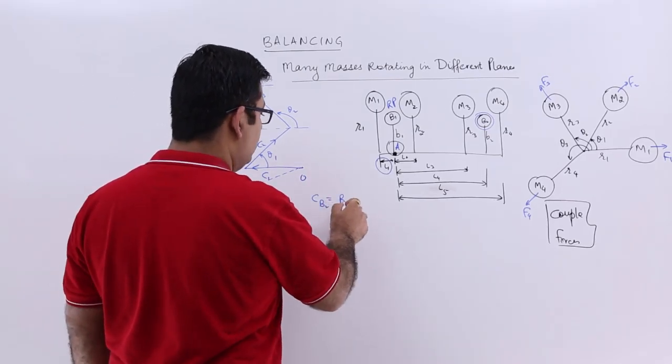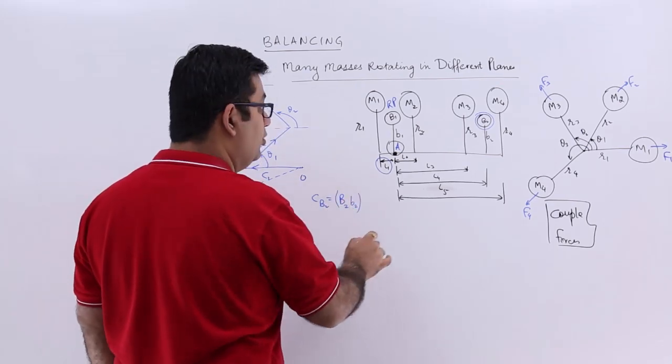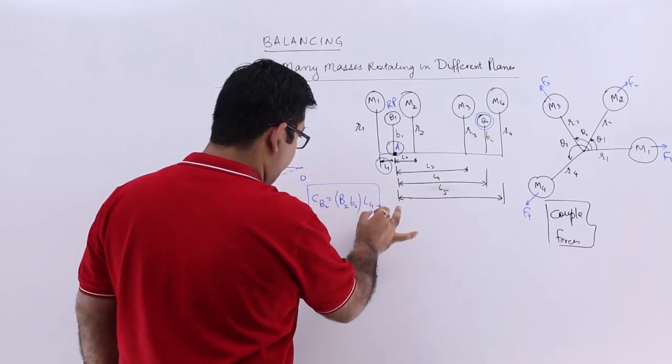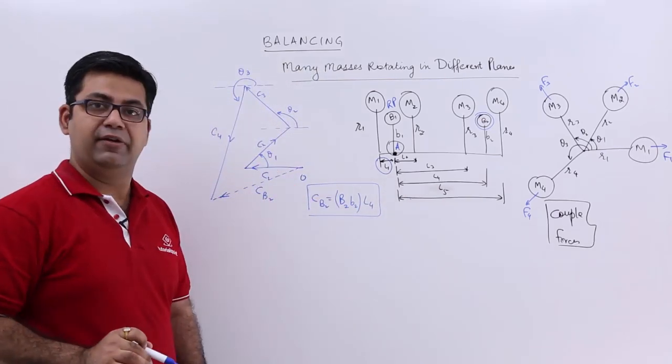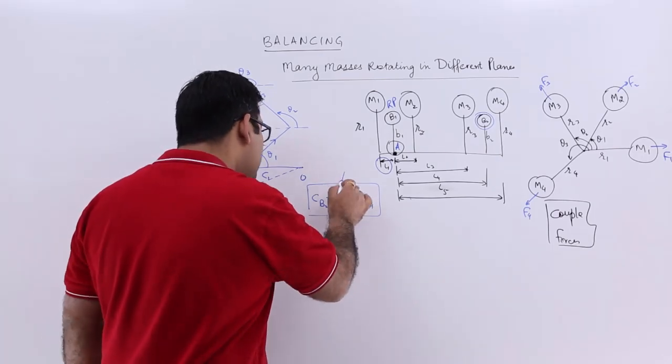And this would be equal to B2 into small b2 into the distance that is L4. With this particular formula or this particular equation, I will be able to calculate B2.